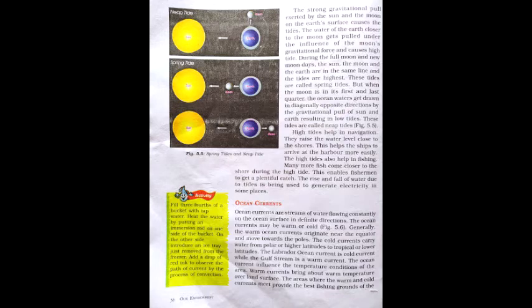Tides are caused due to the strong gravitational pull exerted by the sun and moon on the earth's surface. The water of the earth closer to the moon gets pulled under the influence of the moon's gravitational force and causes high tide. During the full moon and new moon days, the sun, the moon and the earth are in the same line and the tides are highest. These tides are called spring tides.